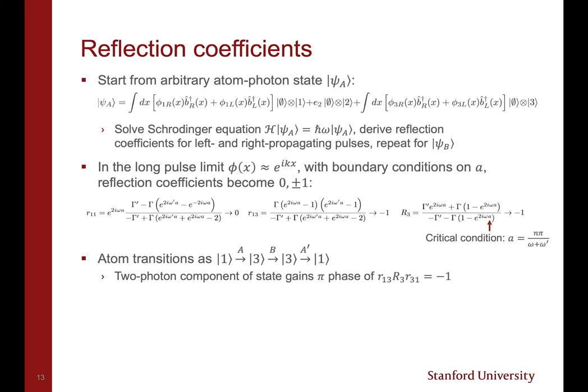In the long pulse limit where the photon wavefunction is approximately e^{ikx}, the reflection coefficients take the form shown here. If the critical boundary condition that Δ = nπ/(ω + ω′) is met, then these reflection coefficients become 0, 1, or -1.